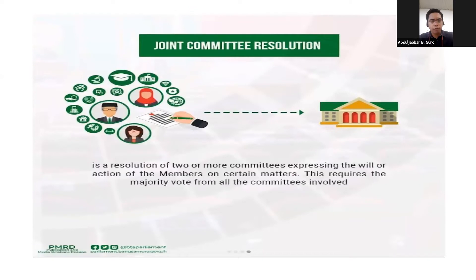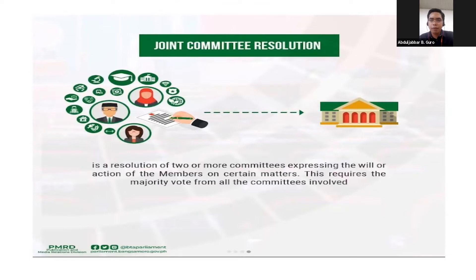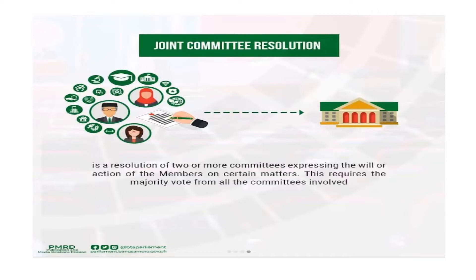Another type is the joint committee resolution — a resolution of two or more committees expressing the will or action of members on certain matters. This requires a majority vote from all committees involved. This type of resolution is rare; in fact, I haven't heard of one passed by the parliament, but it exists in the rules.